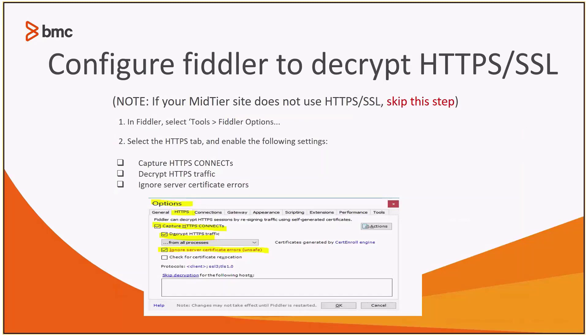If your mid-tier is using HTTPS/SSL, then in order for you to send us a Fiddler capture that BMC support can read, we will need you to decrypt the traffic. In order to do so, you will need to select Options, the HTTPS tab, and enable these three options: Capture the HTTPS connects, decrypt the HTTPS traffic, and ignore server certificate errors. Go ahead and click OK. If you're running HTTPS and you don't do this, then the Fiddler capture will be unusable and unreadable to BMC support.